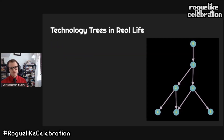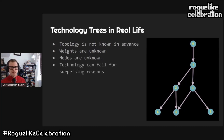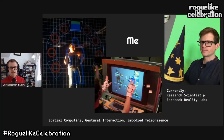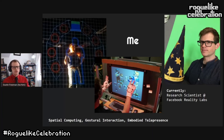In real life, research doesn't exactly flow like this in a very nice way. Topology is not known in advance, weights are totally unknown, nodes are unknown — what possible technologies there are, we don't know. And technology can fail for surprising and unpredictable reasons. I am currently a research scientist at Facebook Reality Labs and for the last 12 years I worked on researching new technologies, so I know a lot about this process.